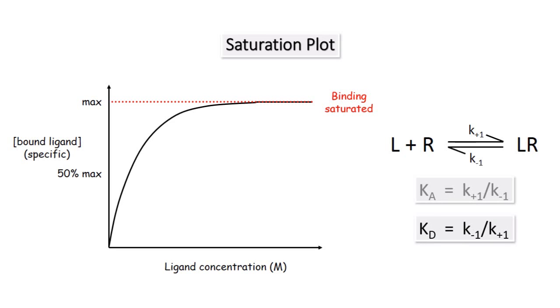The dissociation constant can be easily measured from the saturation curve because it is equal to the ligand concentration at which half of the receptors or the specific sites are bound with ligand. This value can be obtained by drawing a horizontal line at 50% of the maximum specific binding, then reading off the ligand concentration at which that line meets the saturation curve. A low dissociation constant indicates that a low concentration of ligand is needed to bind 50% of the receptors. So a low dissociation constant therefore indicates high affinity.